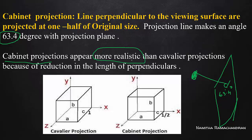So, the two cases are Cavalier and Cabinet Projection. The Cavalier Projection uses 45 degrees, while Cabinet Projection uses 63.4 degrees. In Cavalier Projection, perpendicular object lines map with no size reduction. In Cabinet Projection, perpendicular object lines are mapped with half-size reduction. The Cabinet Projection has a more realistic effect than the Cavalier Projection.